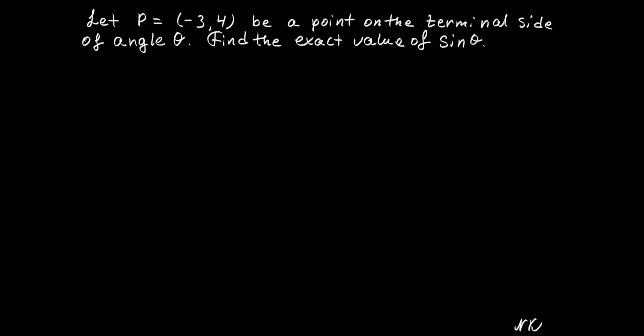Hello! In this problem we have point P, which is negative 3, 4, which is a point on the terminal side of angle theta.